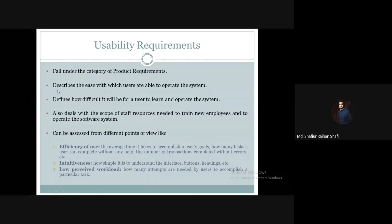Usability requirements describe the ease with which users are able to operate the system. In other words, usability requirements define how difficult it will be for a user to learn and operate the software system — specifically how easy or difficult the system is to operate.